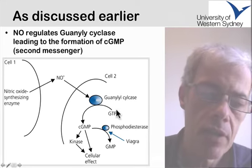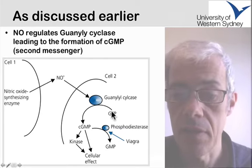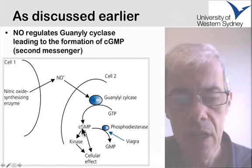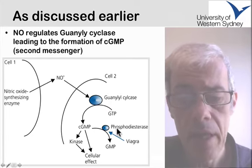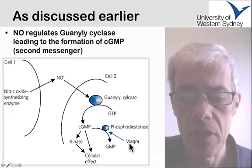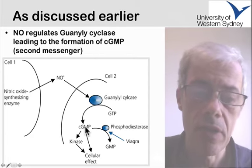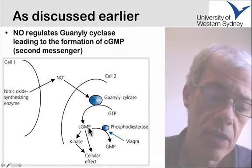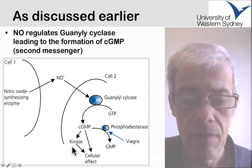Guanylyl cyclase converts GTP to cyclic GMP, in the same way that adenylyl cyclase converts ATP to cyclic AMP. The cyclic GMP is broken down to GMP by a phosphodiesterase, and we discussed in the lectures that Viagra was an inhibitor of the phosphodiesterase, leading to elevated levels of cyclic GMP. One of the things that cyclic GMP can do in the cell is to activate enzyme activities such as kinases, for some cellular effect.